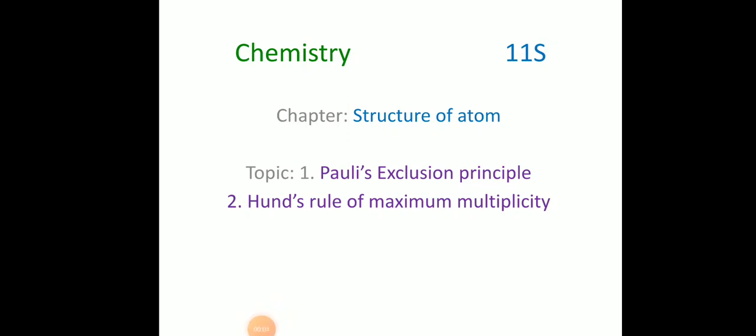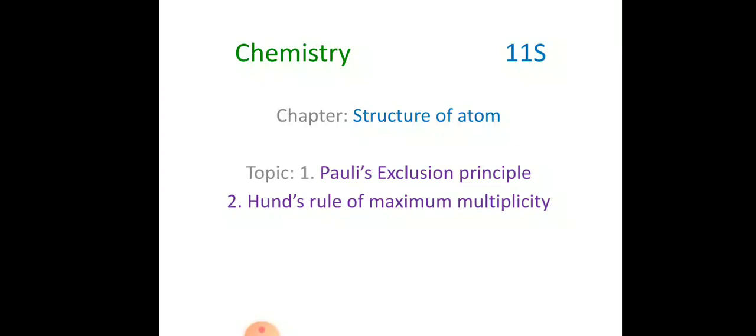Hello class. In our last class we have seen how to write the electronic configurations of the cations and anions. Today we are going to see two important principles: Pauli's Exclusion Principle and Hund's Rule of Maximum Multiplicity. Before this, we discussed about Aufbau principle, from which we learned how to write down the electronic configurations of the elements.